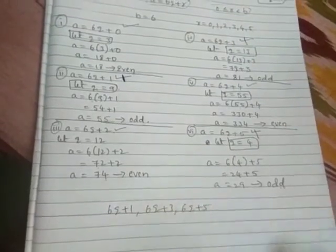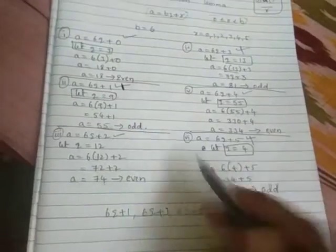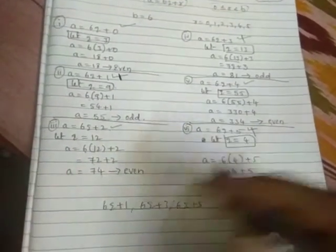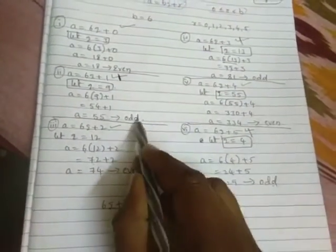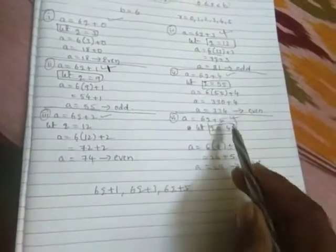In the place of q I substitute positive integers, but I got odd numbers where? In the 6q+1, in the 6q+3, in the 6q+5. But here I got even numbers. That's why it is not only this one.